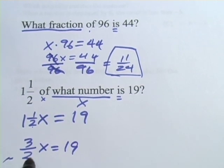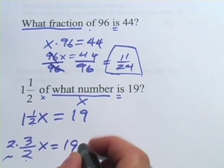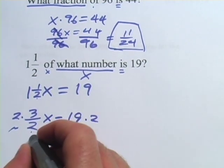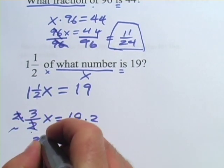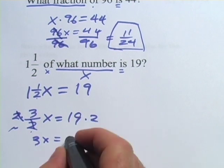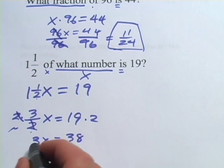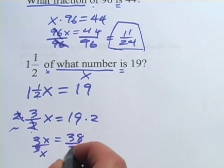And then when I have a fraction in front of my X here, what I usually do is a two-step process. I multiply both sides by whatever's on the bottom and then I divide by what's on the top. So let's start by multiplying both sides by 2, so we get 3X. These twos cancel, so we get 3X equals—and that is 38. Then to get X alone, we're going to divide both sides by 3.